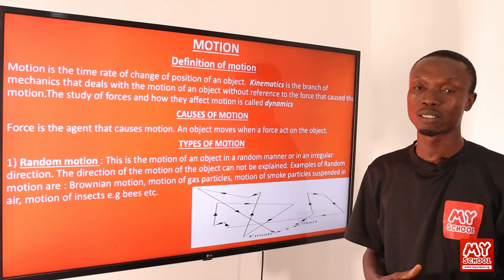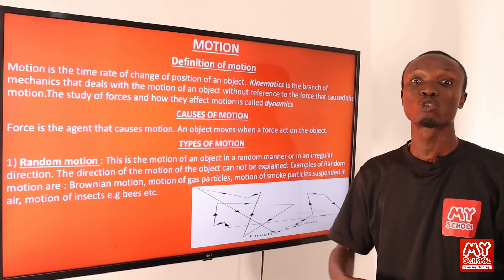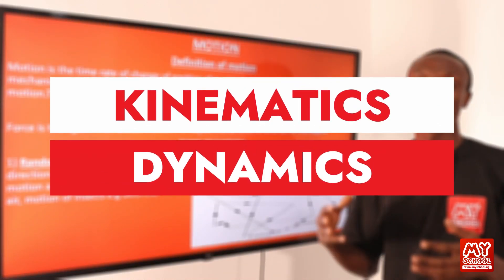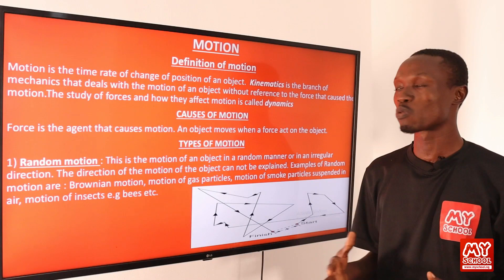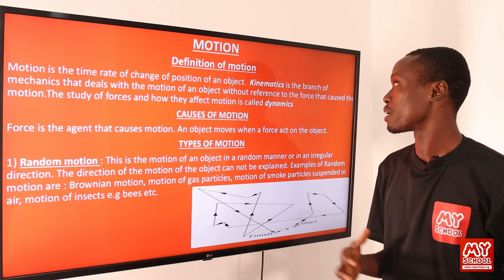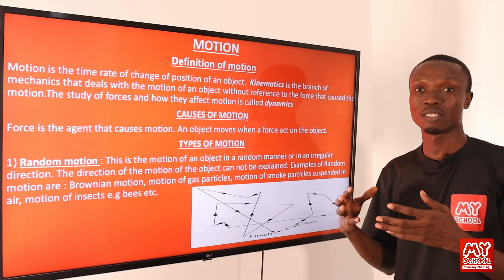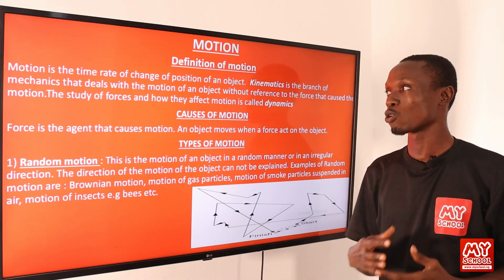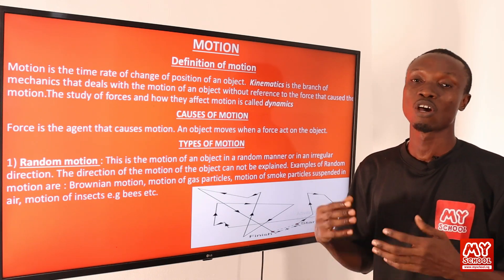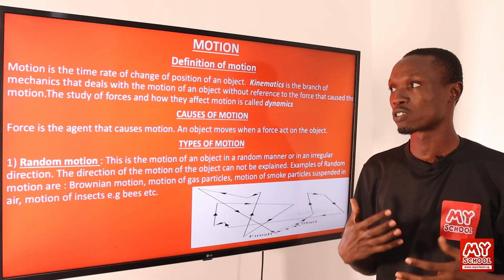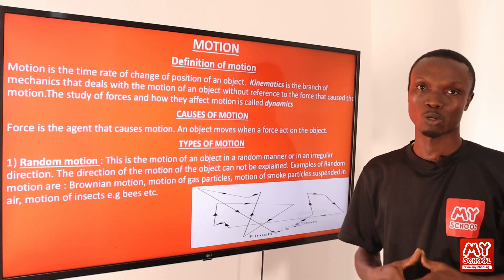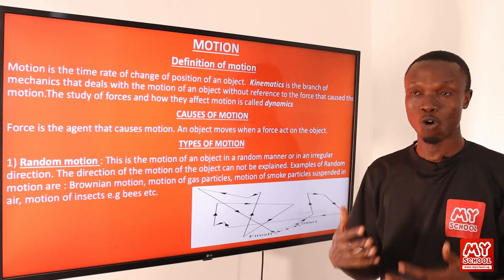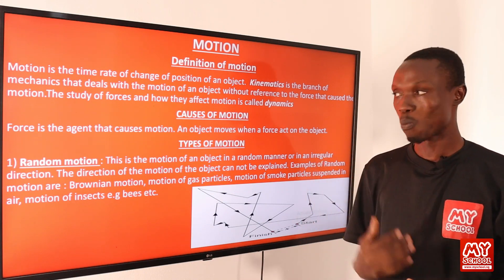In classical mechanics, the study of motion can be divided into two branches: kinematics and dynamics. Kinematics is the branch of mechanics that deals with the study of motion of an object with reference to the force that caused the motion, while dynamics is the study of force and how they affect motion.